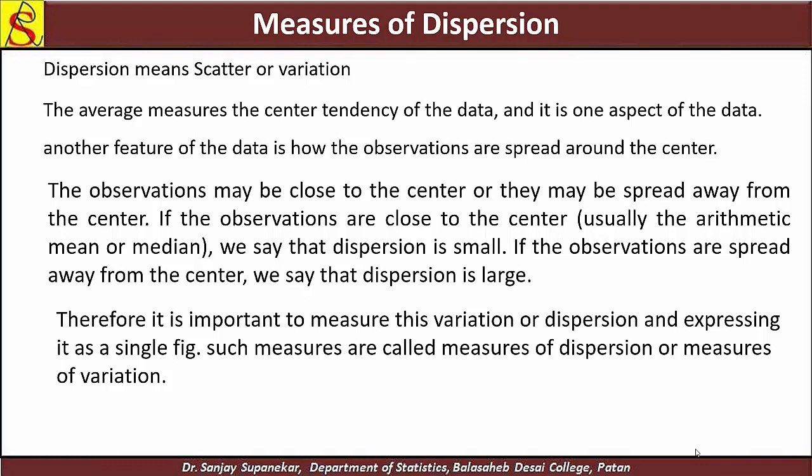Such measures are called measures of dispersion or measures of variation. As we discussed in the last topic, measures of central tendency — when data is applied, there is a central figure representative of the data. The measures of central tendency include the mean, median, mode, geometric mean, and harmonic mean.